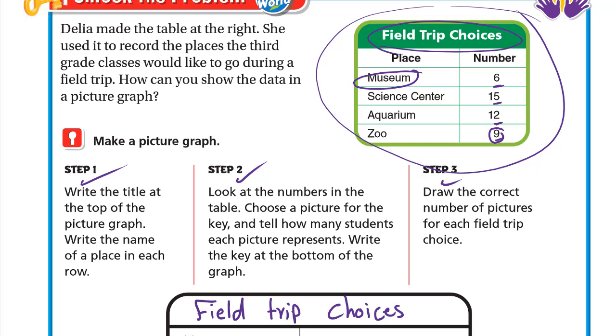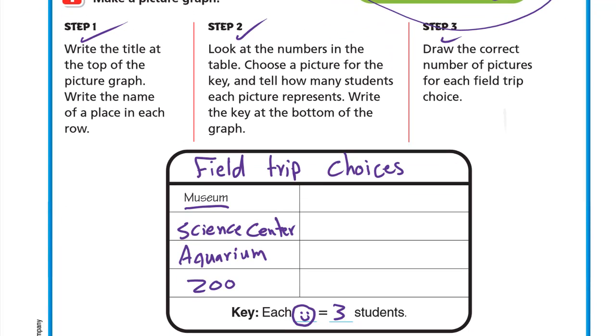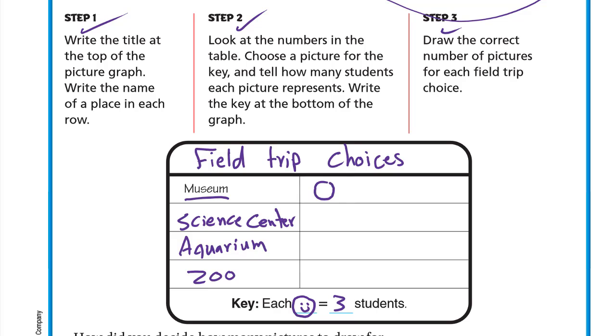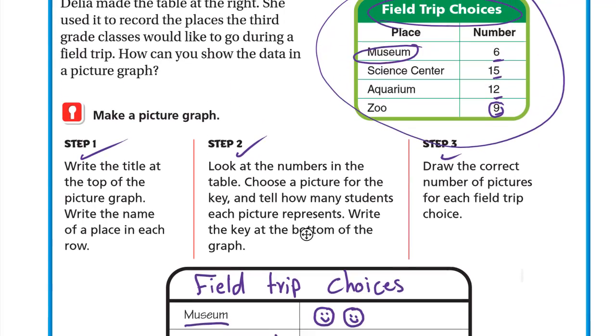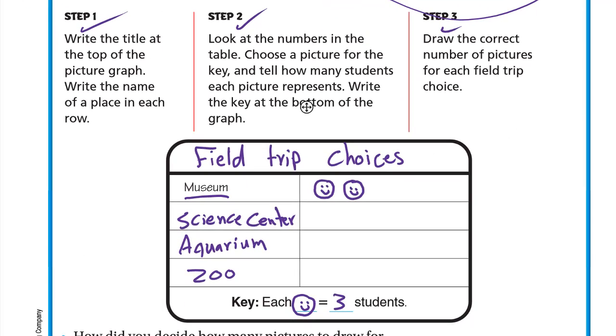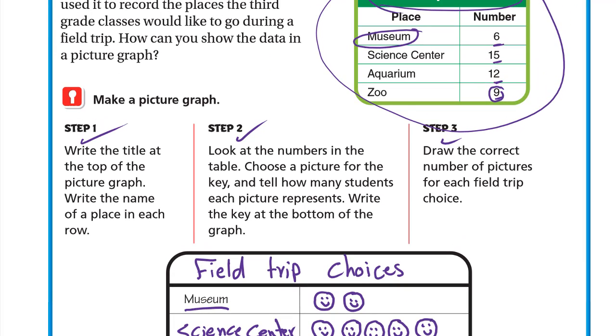Step number three: draw the correct number of pictures for each field trip choice. The museum is 6, so I draw one smile. Three plus three is six, so I need two smiles. The Science Center is 15, so let's count: three, six, nine, twelve, fifteen. I drew five smiles.